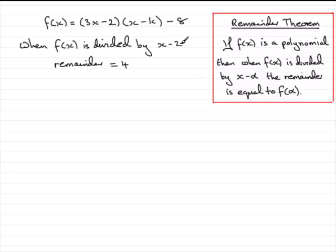So we get the remainder by doing f(2). And we're told that the remainder was 4. Therefore, what we can say is that f(2) must equal the remainder, which is 4.